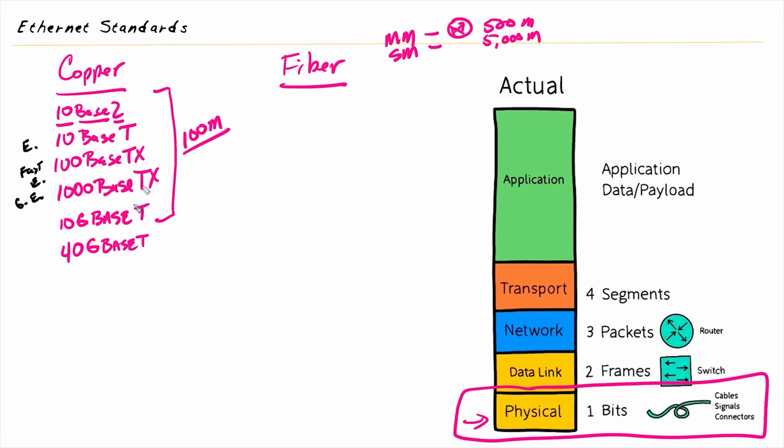For fiber, the actual names are very similar, except we're not going to have T's in there because we don't actually do it over twisted pair. We do it over fiber optic cabling. Some commonalities would be, for example, 100BASE or 1000BASE, which could also be written as 1 gigBASE, or as the speeds go up, 10 gigBASE. And then for the extensions, it's going to depend on the type of signals that we're going to be using, including the SFPs involved as we use that media.